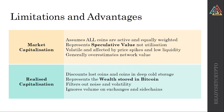To summarize: the market cap assumes all coins are active and equally weights each one regardless of whether they're lost. I look at the market cap as the speculative value — it's an emotive trading metric, volatile, affected by price spikes, and generally overestimates, particularly in bull markets and the euphoria phase. The realized cap discounts lost coins and coins in deep cold storage, representing the wealth actually stored in Bitcoin — how much people are saving in Bitcoin — and filters out a lot of noise. It does ignore volume on exchanges and sidechains, and we'll see how Lightning Network adoption plays in.